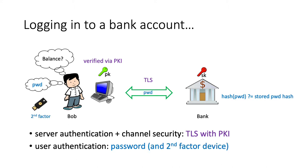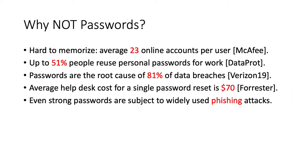Sometimes we may require the user to have a second-factor device for stronger security. It could be a smartphone or some secure token that shows a one-time password. Passwords are very easy to use, but it's well known that they have a lot of issues. According to a Verizon report, more than 80% of data breaches are because of password issues, so it's good to get rid of them.